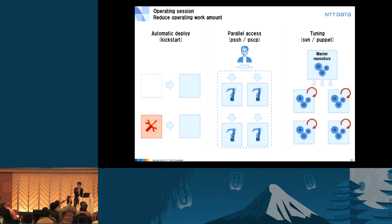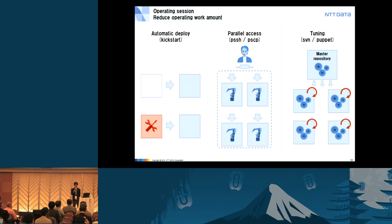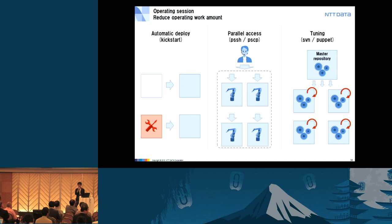The first point is reducing operating work amount. We use well-known operating tools. To rebuild failed nodes or build scale-out nodes easily, we use PXE Boot and Kickstart. To access many nodes in parallel, we use PSSH and PSCP. To ensure tuning is applied consistently, we use SVM for configuration management and Puppet for configuration deployment. These tools are very well-known and used in many projects, so we can rely on them.